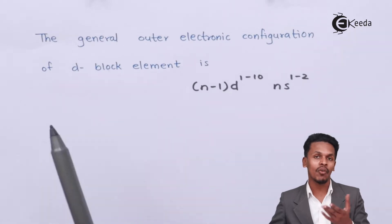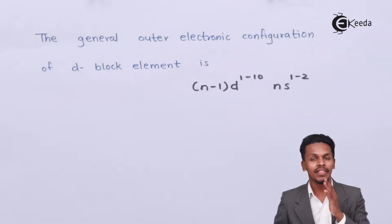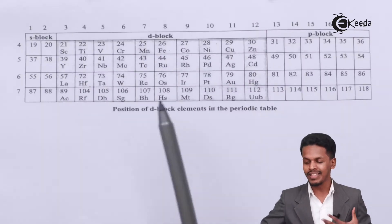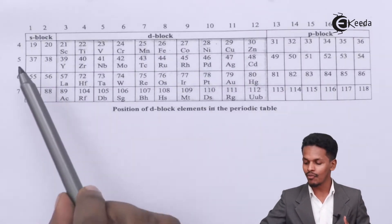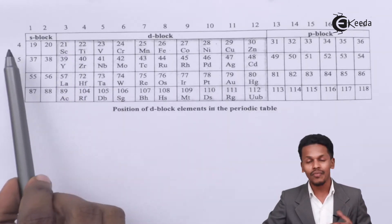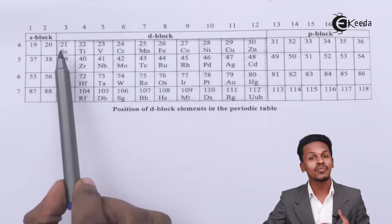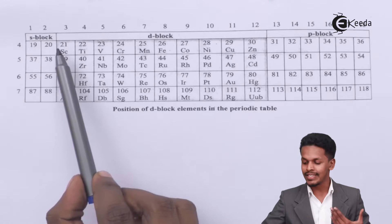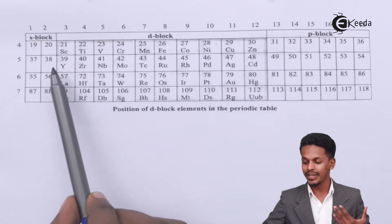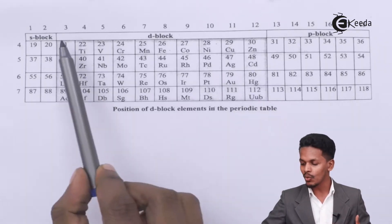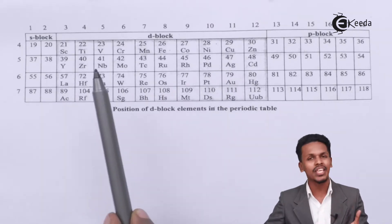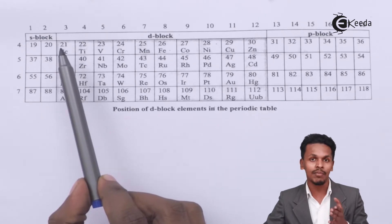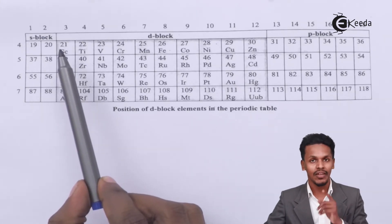Now let us understand the first D block element, that is scandium. The D block elements start with the fourth period and begin with scandium, which belongs to the third group. From scandium till zinc, and from ytterbium till cadmium, these are all known as D block elements. Now let me give an example related to scandium — how we can write its electronic configuration and why scandium is a D block element.